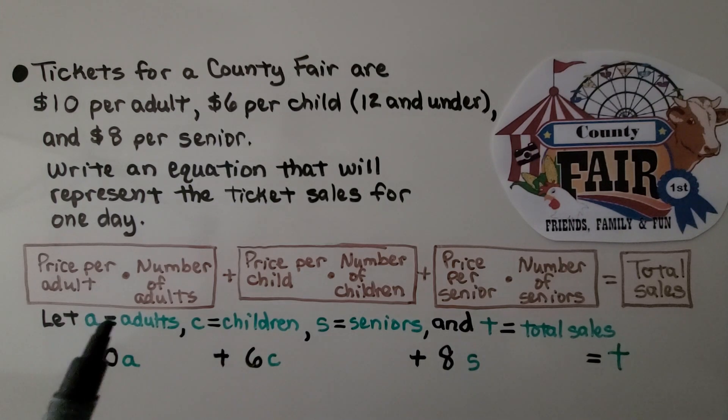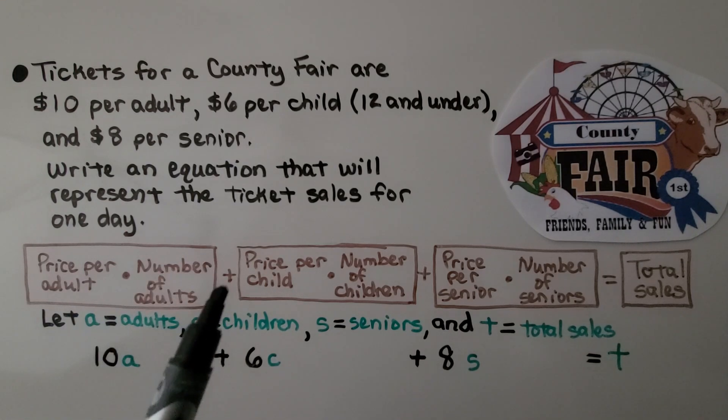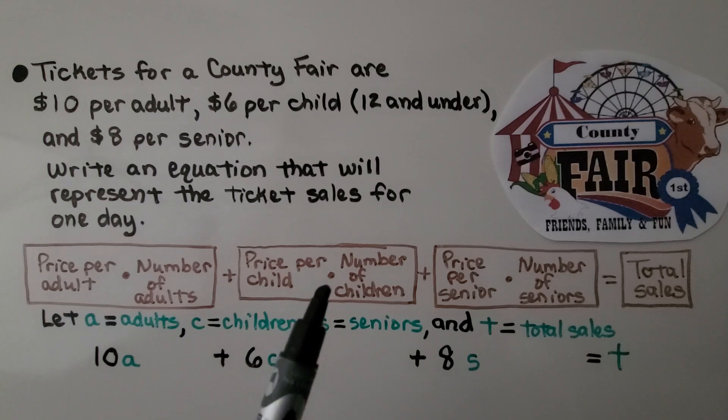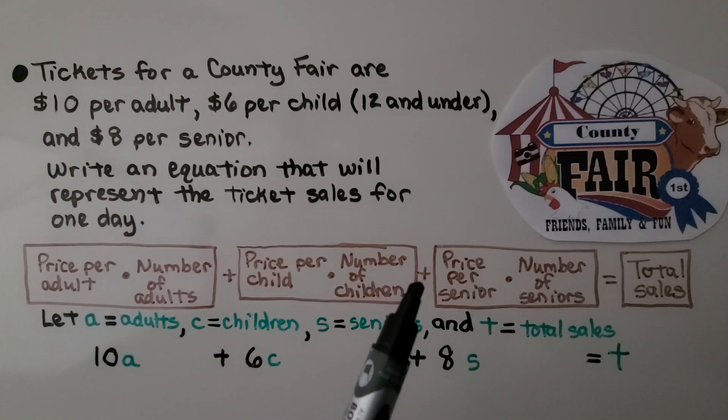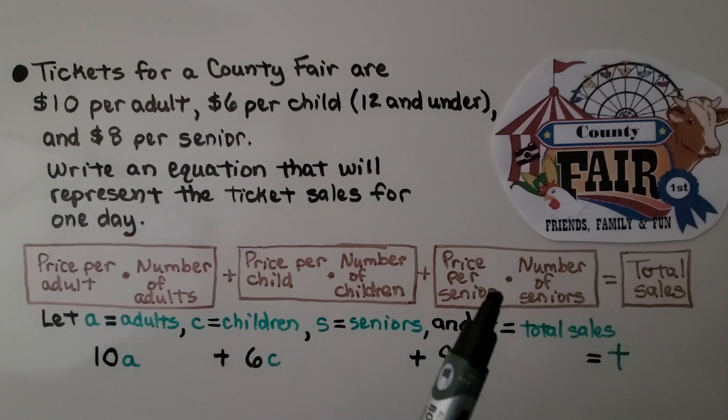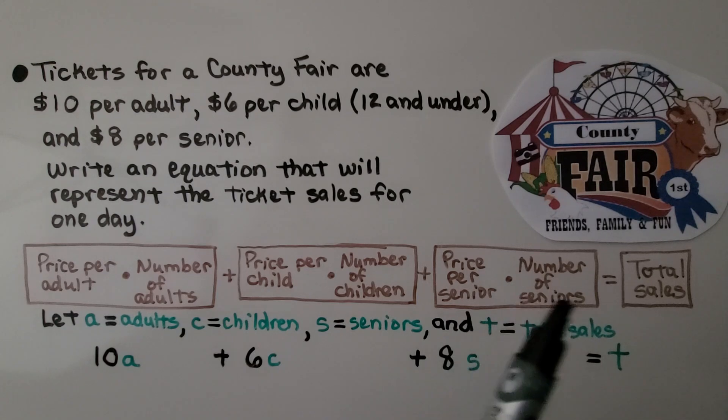We have the price per adult times the number of adults, and we're going to add that to the price per child times the number of children. We're going to add that to the price per senior times the number of seniors, and that will give us the total sales.